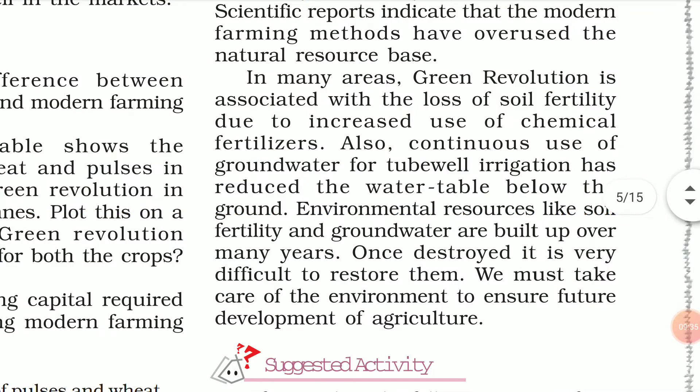Apart from soil fertility, ground water was excessively used because HYV seeds require more irrigation, meaning more groundwater was drawn. The continuous use of groundwater for tube well irrigation has reduced the water table below the ground. Older generations recall wells filling up in the rainy season, but today the water table has been so depleted that this is unimaginable.